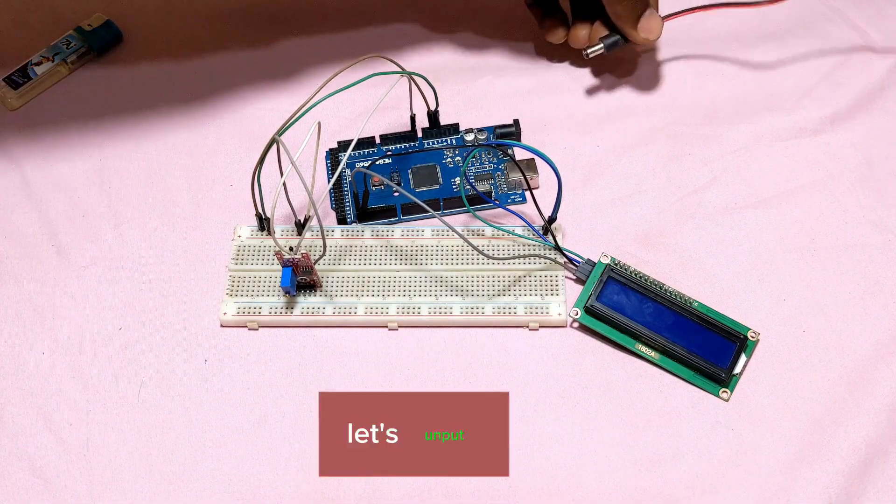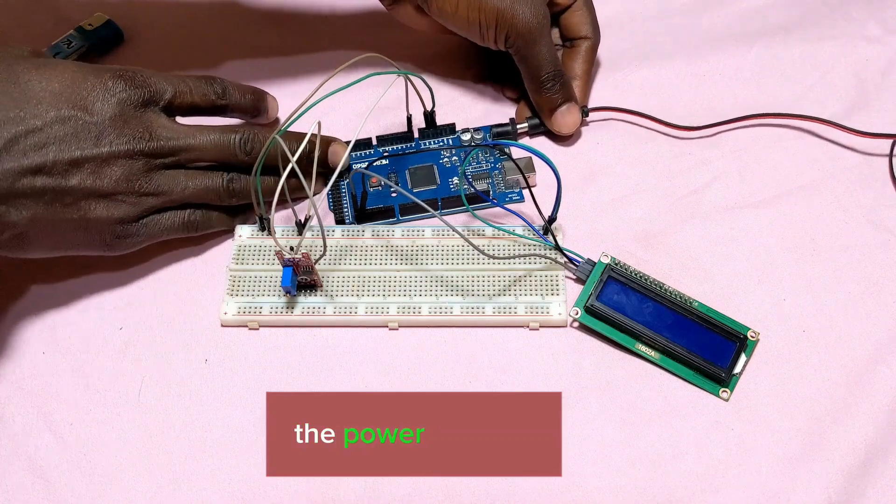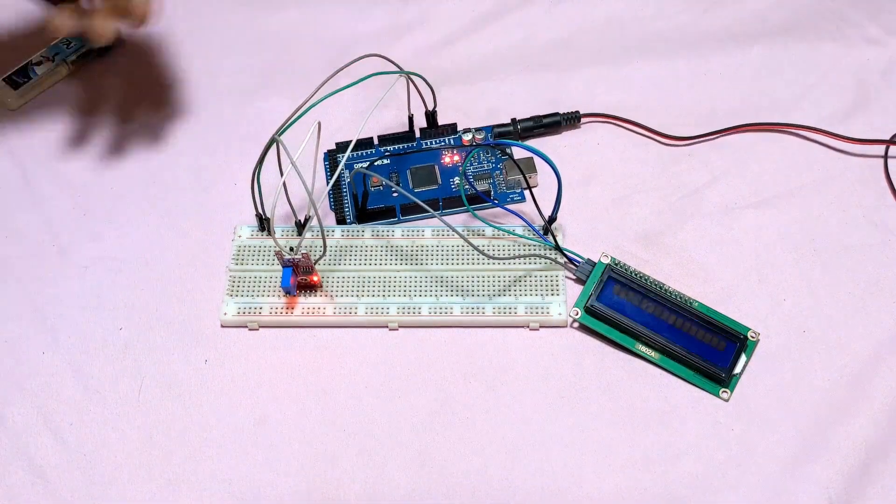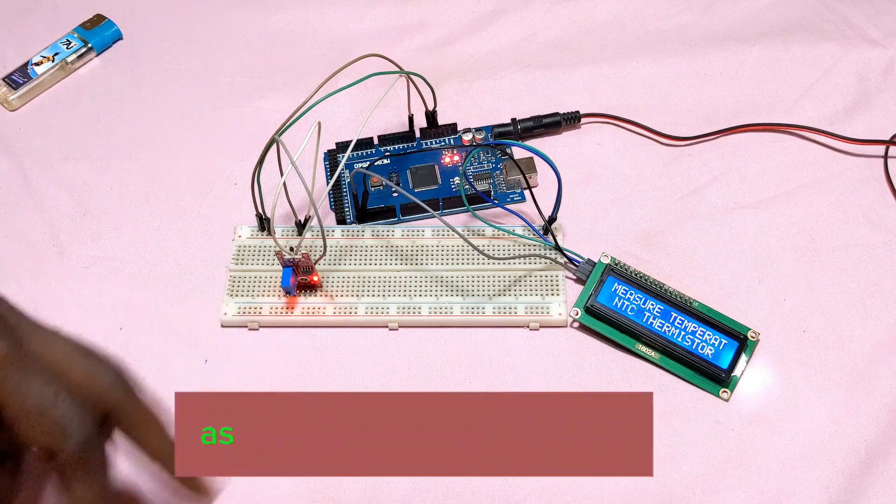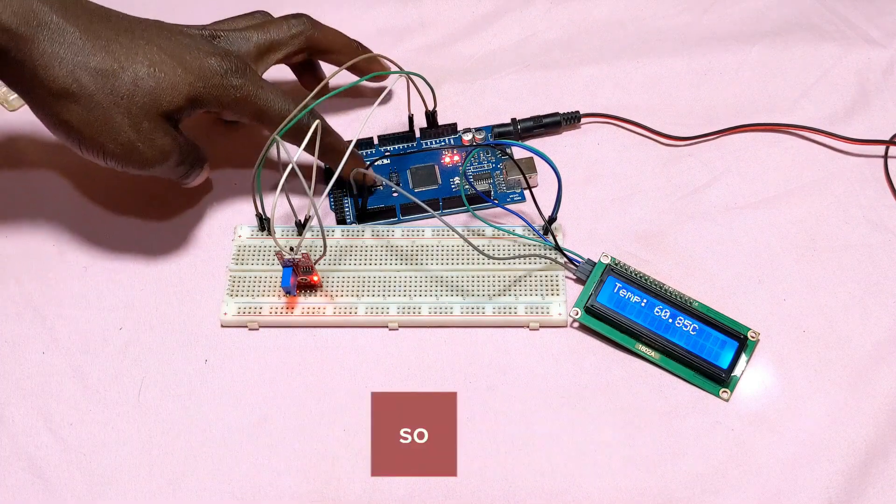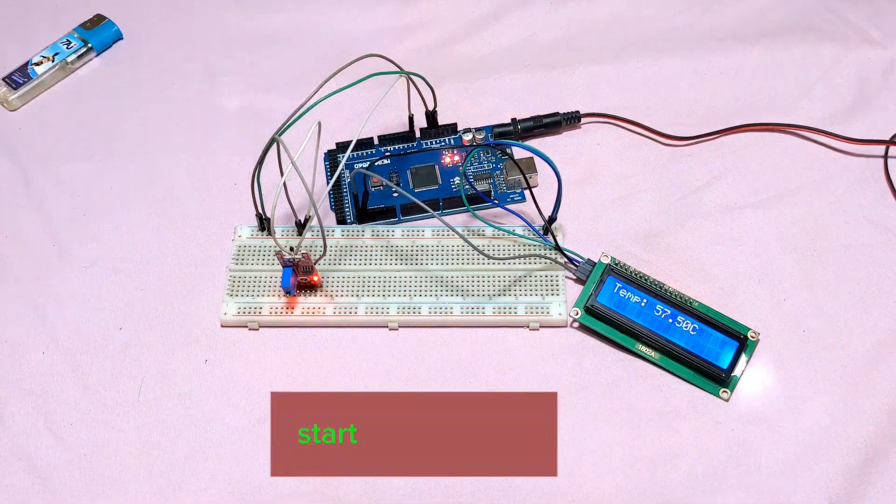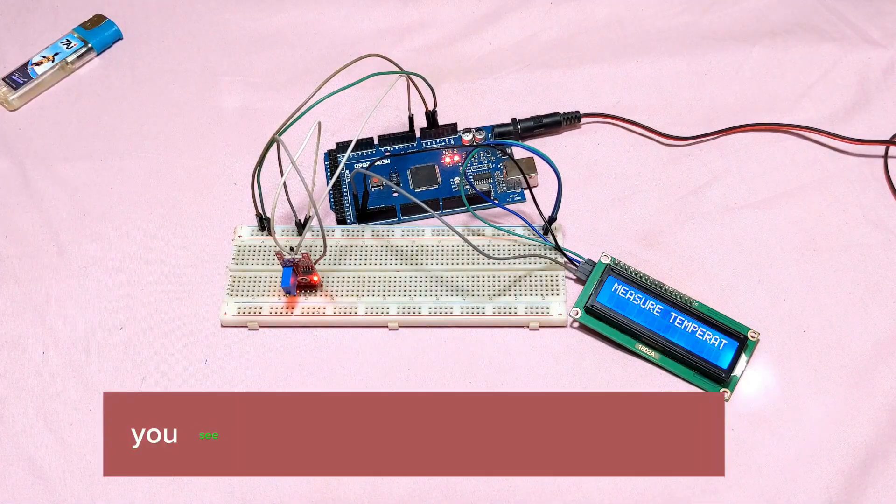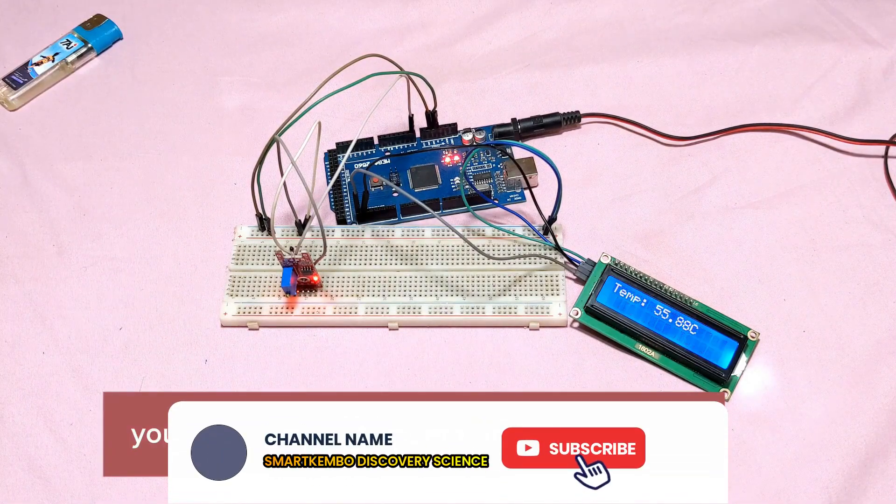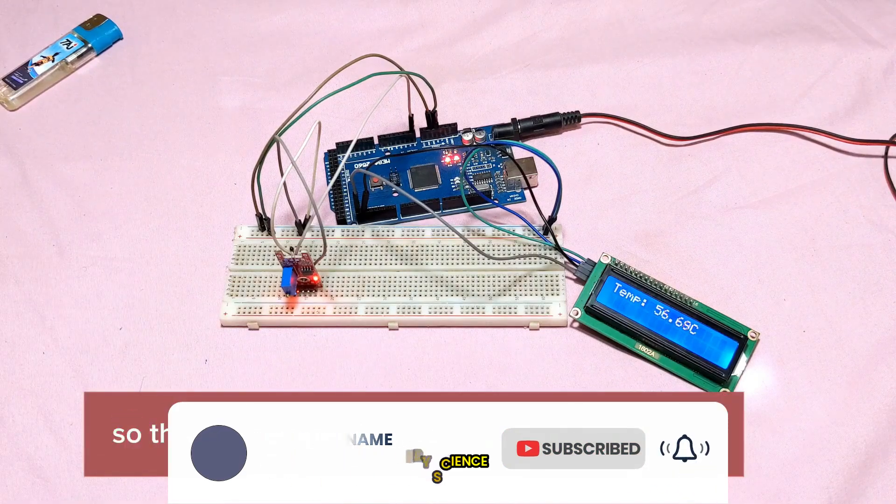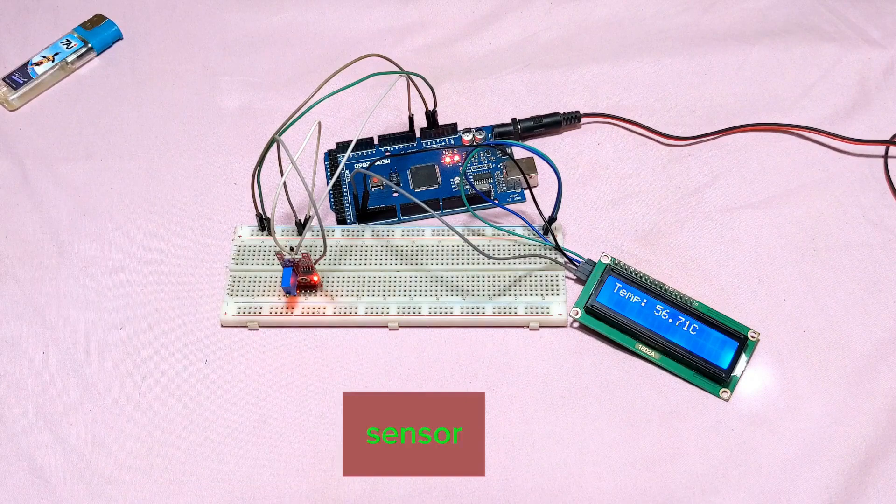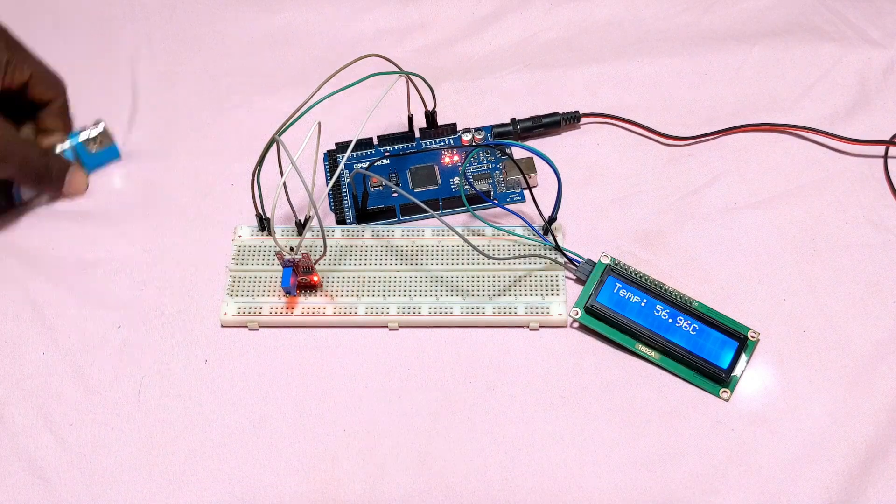Let's input the signal. As you see, it measures temperature - you see 'Measure Temperature Using NTC.' This is the temperature being measured by the sensor.